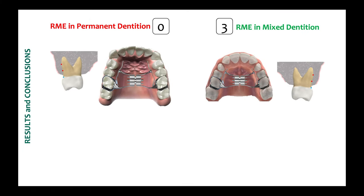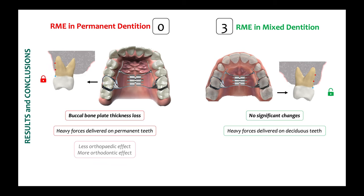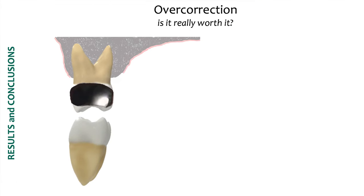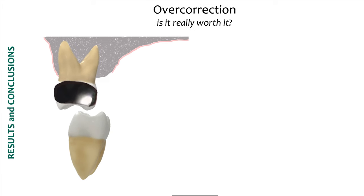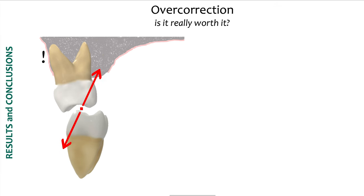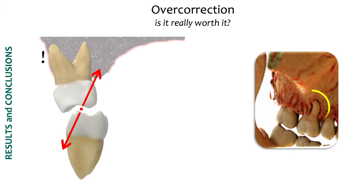To summarize the findings, there was buccal bone plate thickness loss in the permanent group compared to the deciduous group, and thus there was more orthodontic effect on the permanent group compared to the deciduous group. To conclude, the key message is: is it really worth it to overcorrect? Because with more bone loss, this can be a significant side effect, as we can see in the picture here, and this can bring about more fenestrations and bone loss, as can be seen in the CBCT picture ahead.